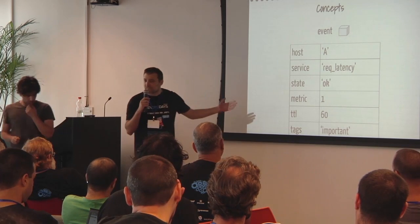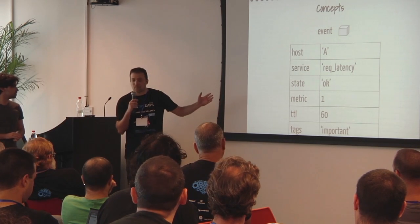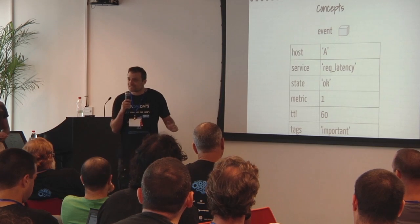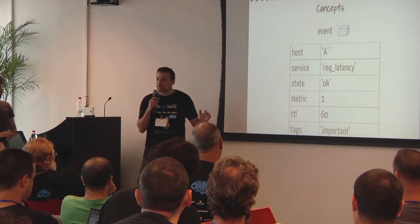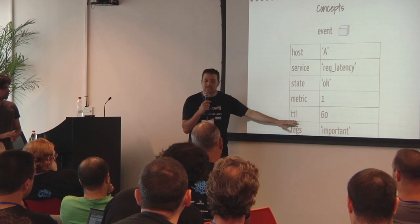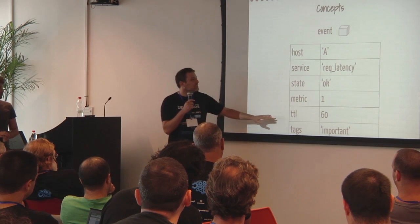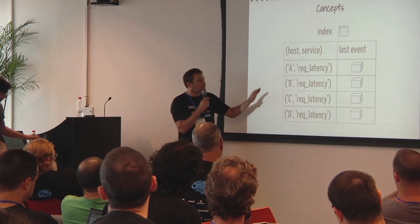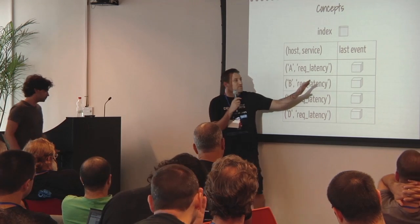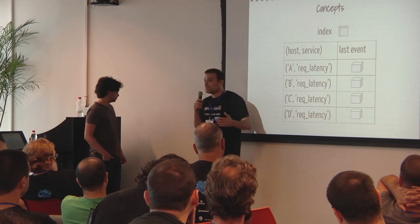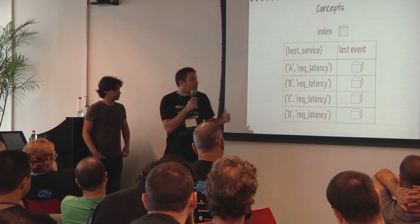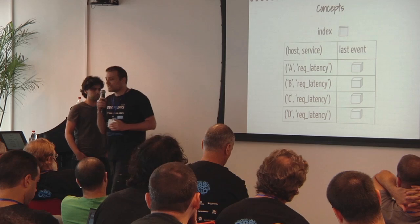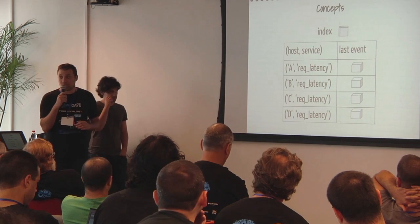Chuck Norris handles the bad guys the same way Riemann handles events — first kicks ass, then they lock him up, and then they wait until the event expires, which has time to leave. The interesting part is where you lock the events. For each service on each host, we store the last event until a new event comes, or until it expires.